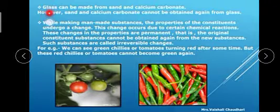Glass can be made from sand and calcium carbonate. However, sand and calcium carbonate cannot be obtained again from glass. While making man-made substances, the properties of the constituents undergo a change. This change occurs due to certain chemical reactions. These changes in the properties are permanent - that is, the original constituent substances cannot be obtained again from the new substances. Such substances are called irreversible changes.